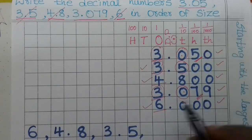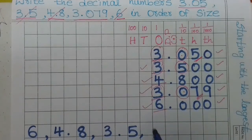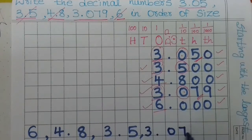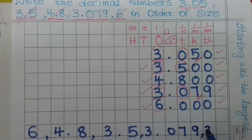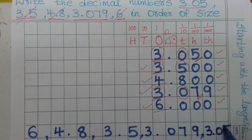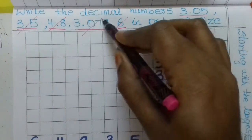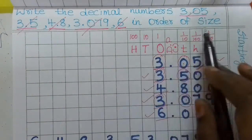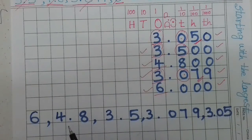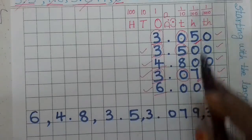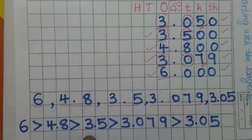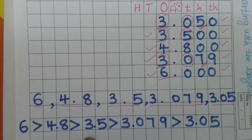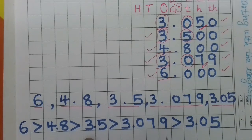Among the remaining numbers, 3.079 and 3.05, the tenths digits are both 0, so we compare the hundredths place. 7 is the largest hundredths digit, so 3.079 comes next. The last remaining number is 3.05. So the final order from largest to smallest is: 6 > 4.8 > 3.5 > 3.079 > 3.05.